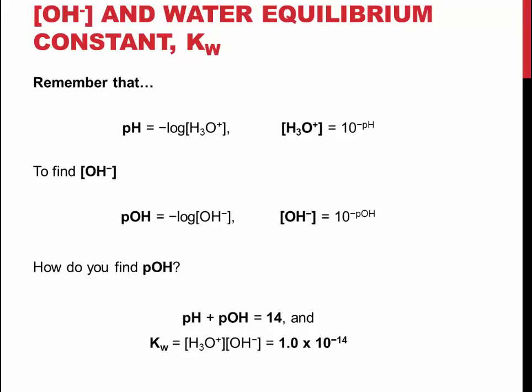The pH and the pOH add up to 14, just as the product of multiplying the concentration of hydronium and hydroxide ions together should always equal Kw.